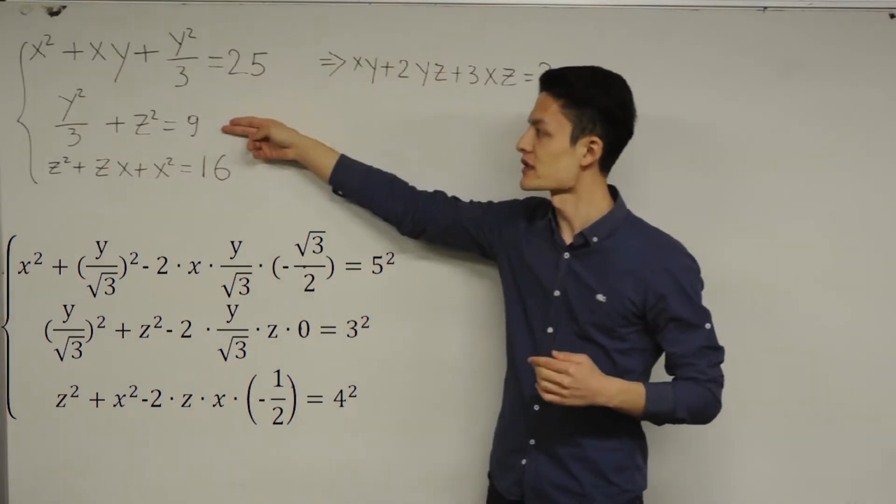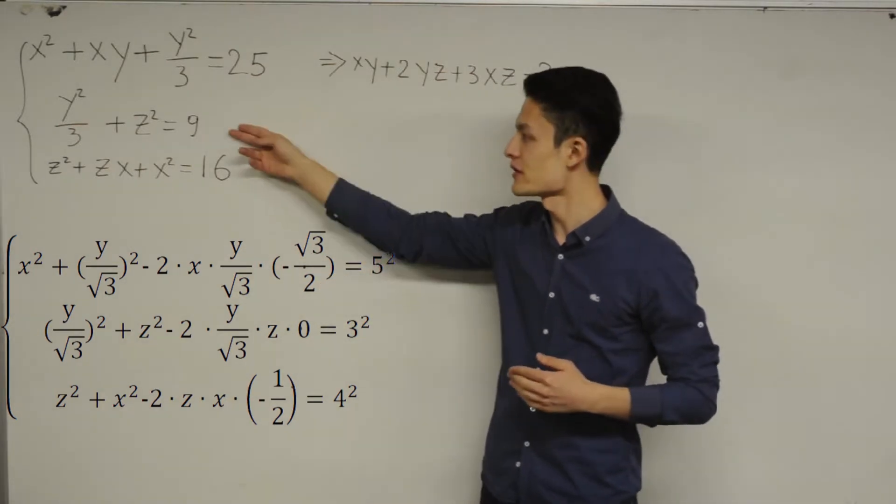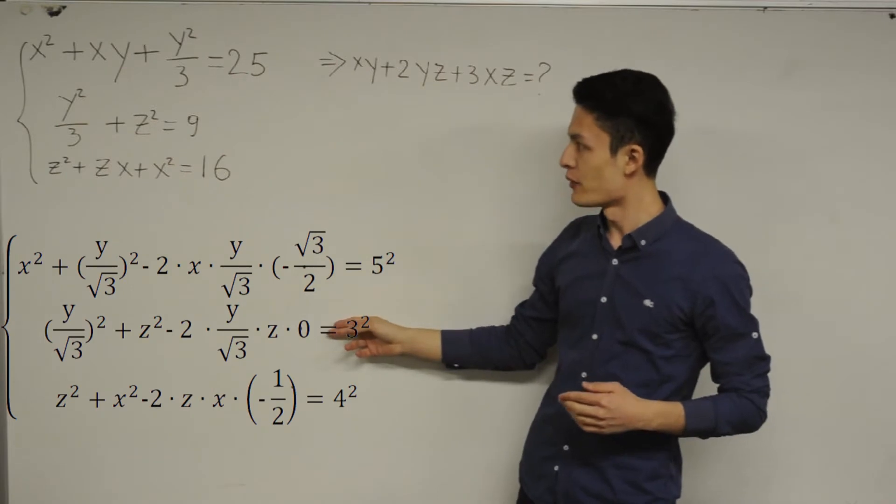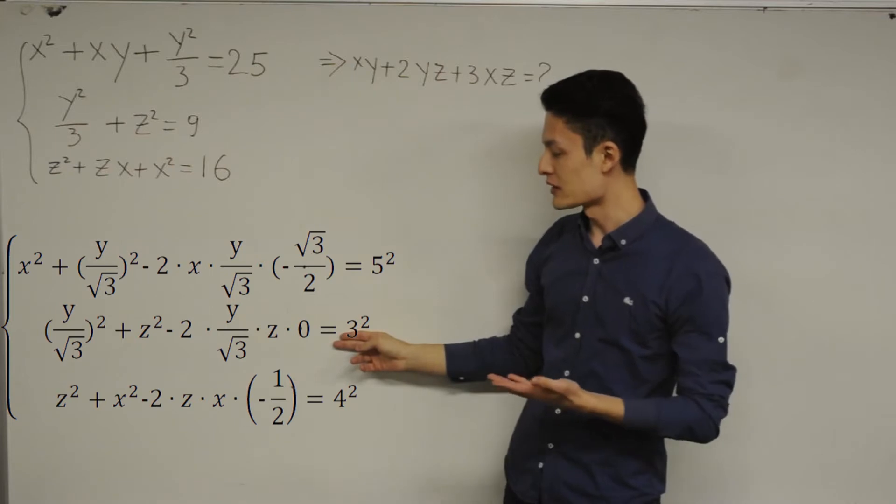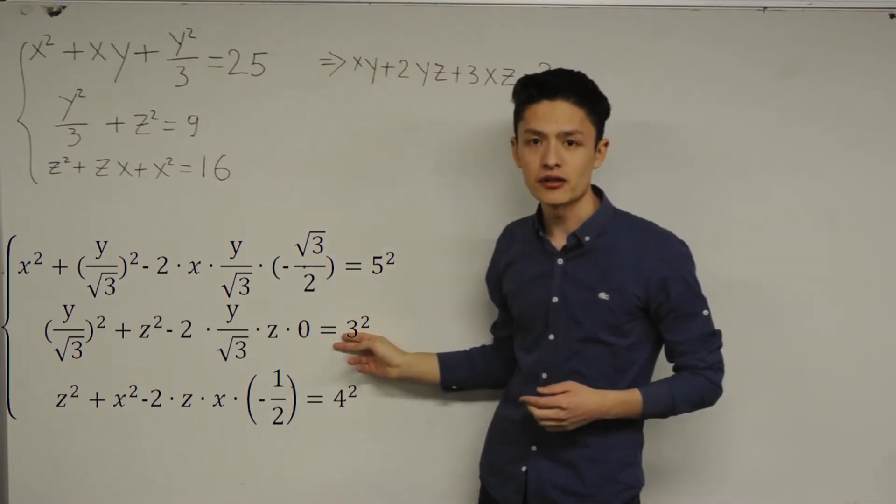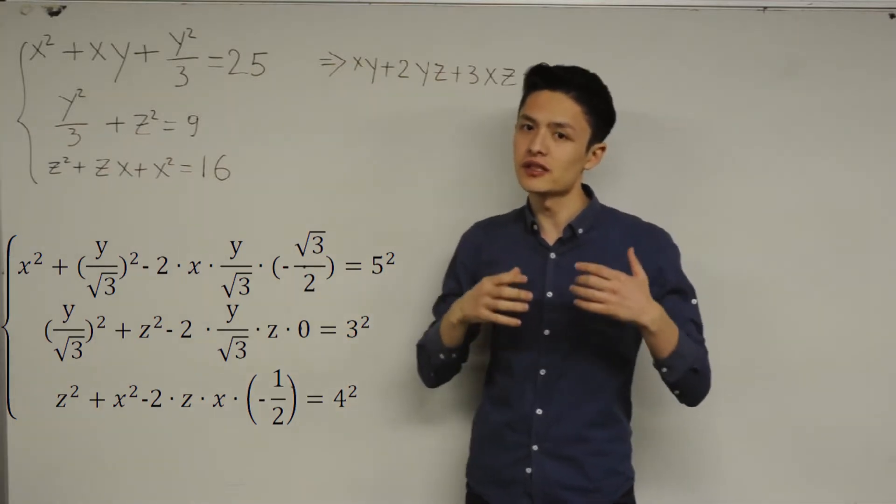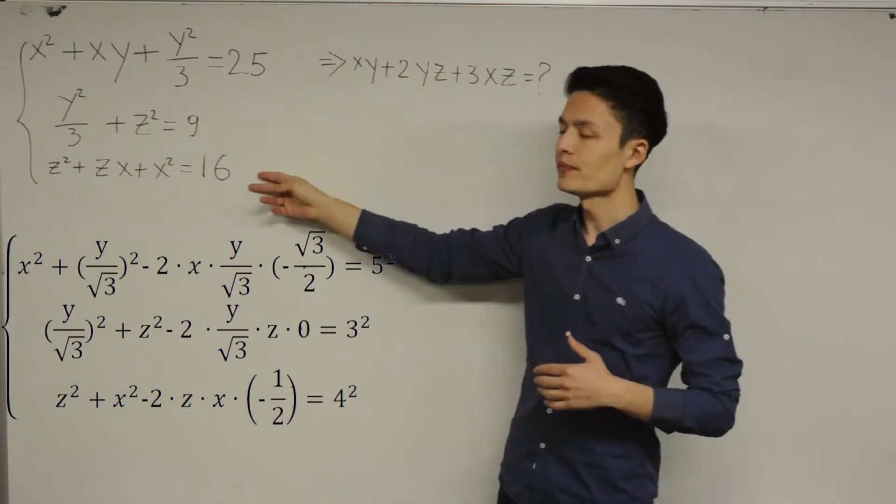And then now, we do the same thing with the second equation. So we can write this second equation as this. But do we have yz here? No, that's the reason why we are multiplying yz minus 2 times yz by 0.